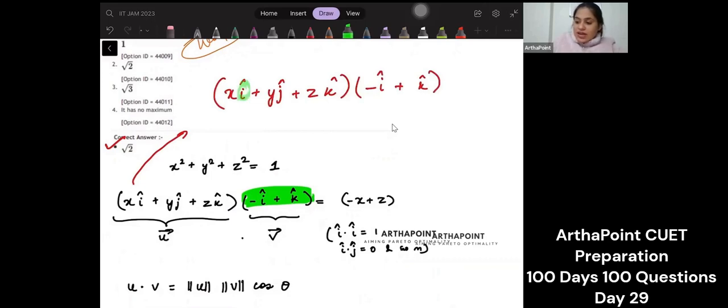Dekho, i ka i ke saath will become 1. And then I have this minus x. So this will become minus x. i ka k ke saath will become 0.